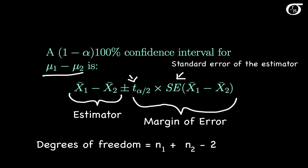We would find the t sub alpha over 2 value in the usual ways, using software or a t-table, with degrees of freedom n1 plus n2 minus 2.